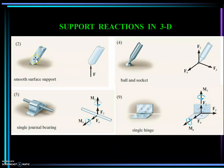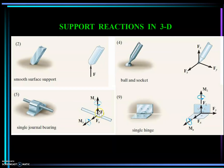How about in 3D? Same principle. If an element rests on a surface, that provides only one unknown. Instead of a pin, in 3D you have a ball-and-socket support, which prevents horizontal movement in X, Y, and Z — developing Fx, Fy, and Fz — but since it allows rotation, no moments are developed. A single journal bearing develops Fx, Fz, and moments about X and Z. Familiarize yourself with the single hinge and what reactions each support produces.